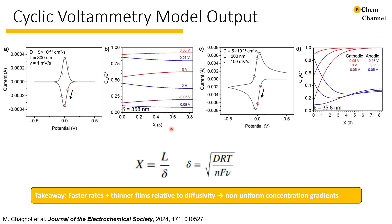I would like to highlight here the use of the x-axis, which is not a real film thickness but rather a dimensionless film thickness equal to the real film thickness normalized by a diffusion layer length. We define our diffusion layer length as a functional ratio between the diffusivity and the scan rate, normalized by RT over NF. Essentially, we are looking at the ratio between the film thickness and the length over which particles are able to diffuse on the time scale of the experiment. The result is that even though this is a 300 nm film in both cases, the dimensionless film thickness is much smaller for the 1 mV/s case than for the 100 mV/s case.